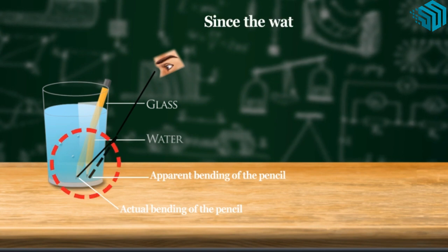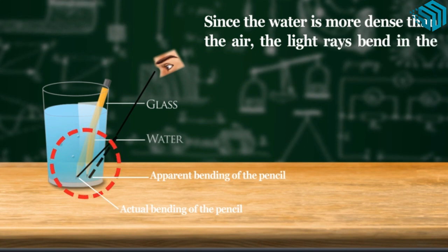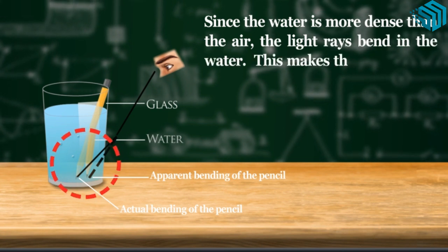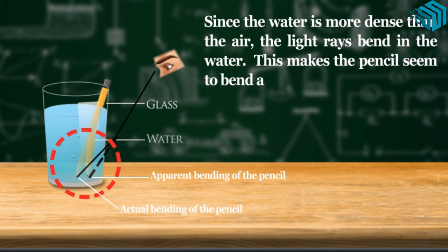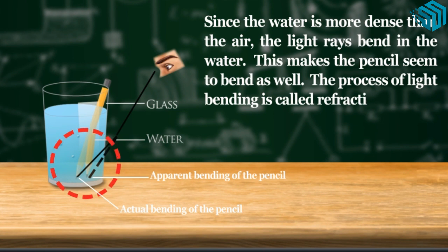Since the water is more dense than the air, the light rays bend in the water. This makes the pencil seem to bend as well. The process of light bending is called refraction.